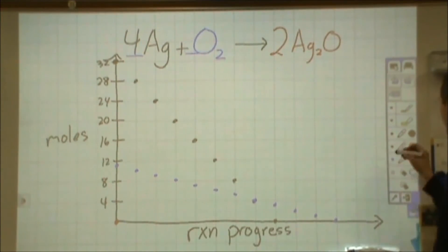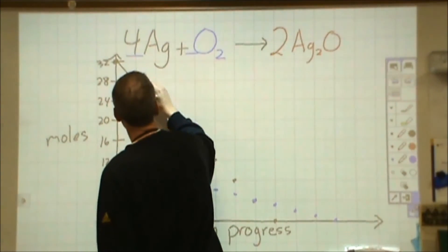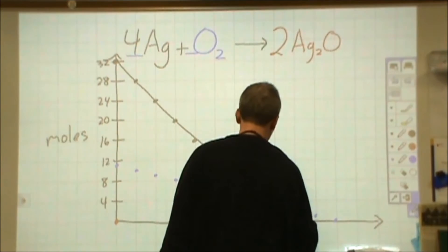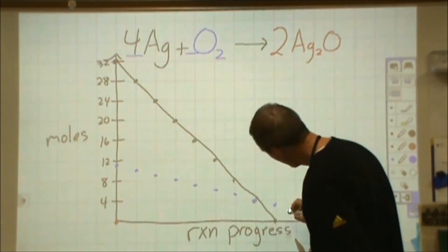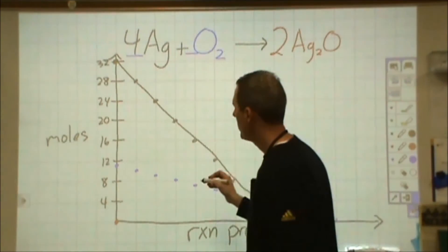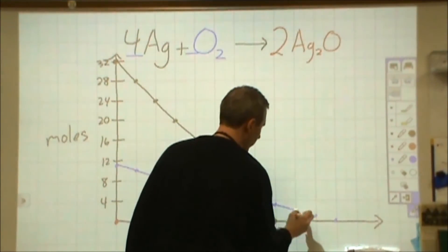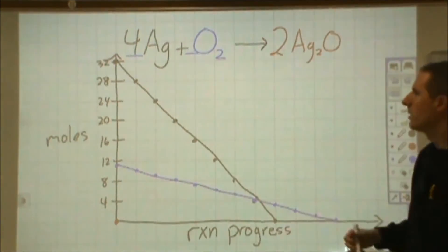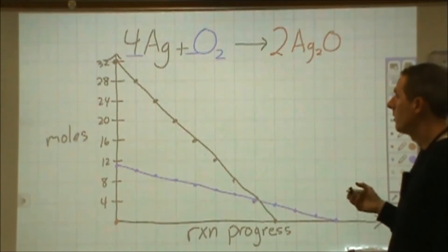So what we can see is that the fact that I use four silver atoms for every one molecule of oxygen means that I'm going to use up my silver much faster. Now I started with significantly more moles of silver and significantly less oxygen, but I also used up my silver significantly faster.